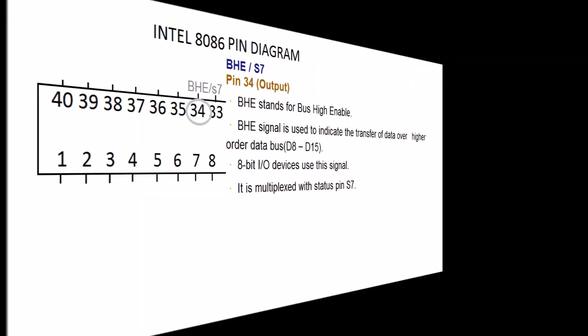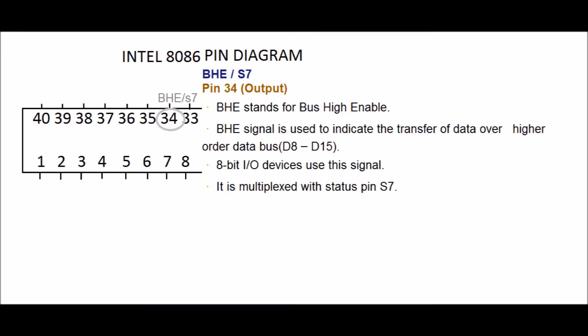BHE, S7. PIN 34, output. BHE stands for bus high enable. BHE signal is used to indicate the transfer of data over higher order data bus D8 to D15. 8-bit I/O devices use this signal. It is multiplexed with status PIN S7.